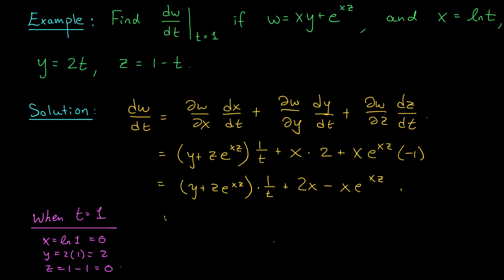So my final answer should be dw over dt at t equals 1 is equal to, well, y is 2, so 2 plus 0 times e to the 0, times 1 over 1 plus 2 times 0 minus 0 e to the 0 times 0. That gives me what? This goes away, this goes away, this goes away. My final answer is just 2.